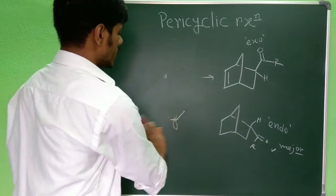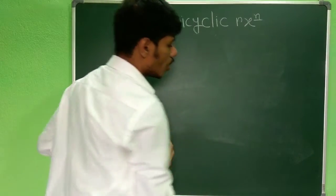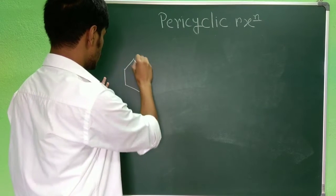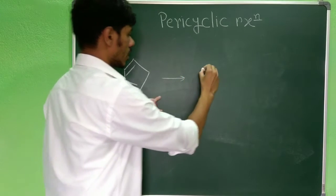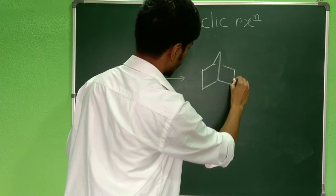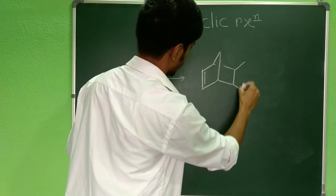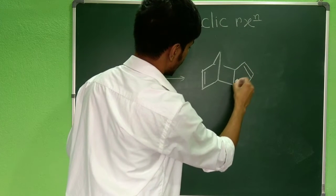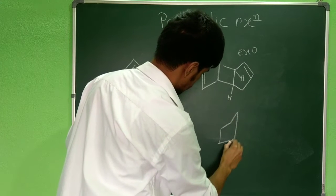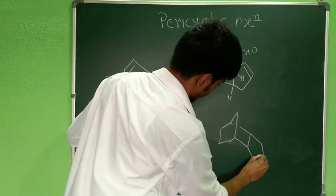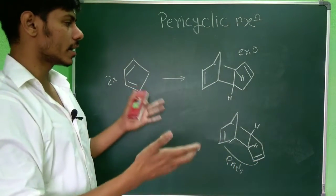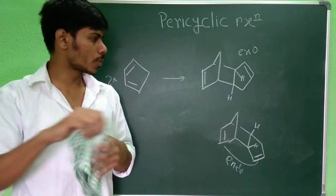That is why the reaction leads to the endo product. This phenomenon is called the endo rule. Another example of this can be seen with cyclopentadiene dimerization — if you have two cyclopentadiene molecules, they dimerize and the product can have two possibilities. Either this bridge can be above the plane, which is the exo product, or the endo product where these two different bonds are on the same side. Here again, you will get the endo product as your major product over the exo product.